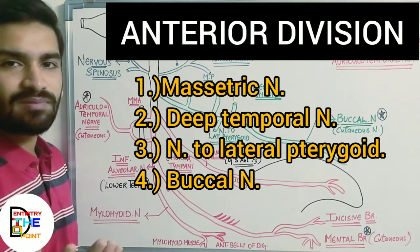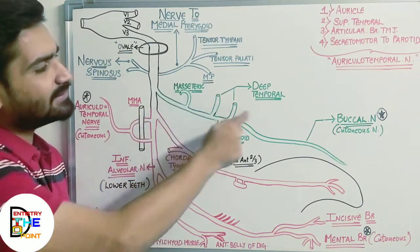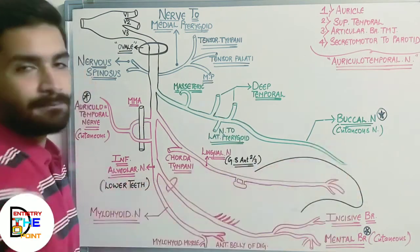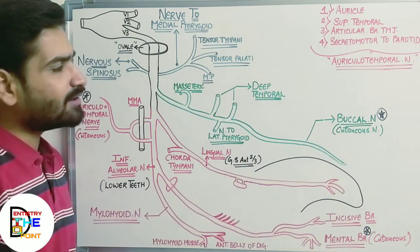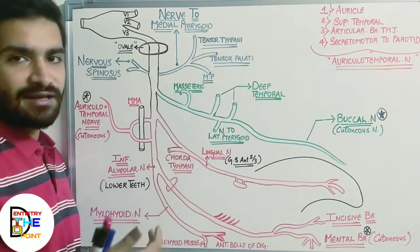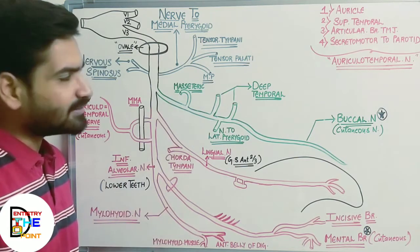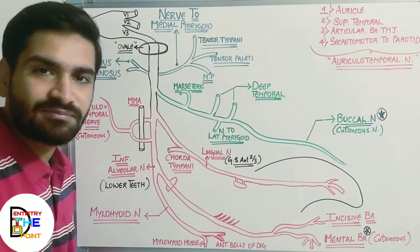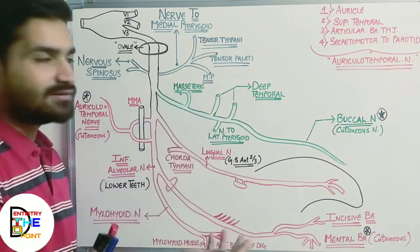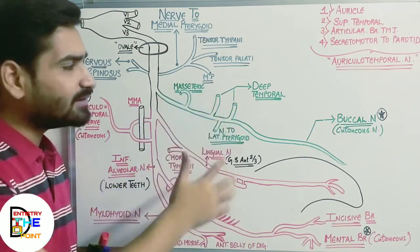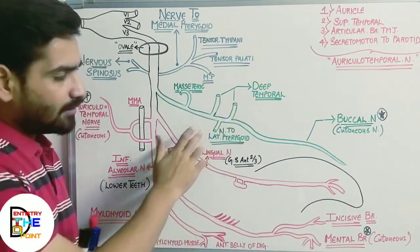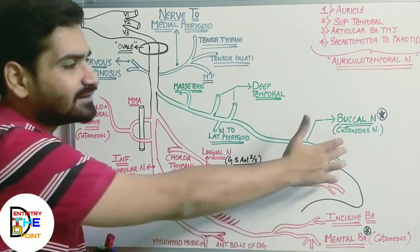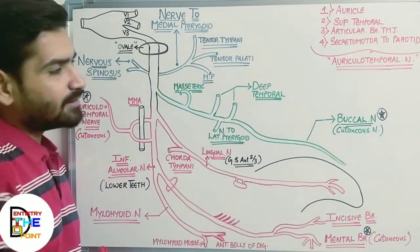Moving on to the anterior division of the mandibular nerve, it has four branches. The first branch is the masseteric nerve, the second is the deep temporal nerve, the third is the nerve to lateral pterygoid, and the fourth is the buccal nerve — the buccal branch of the mandibular nerve. The masseteric nerve supplies the masseter muscle, a muscle of mastication. The deep temporal nerve supplies the temporalis muscle, and the nerve to lateral pterygoid supplies the lateral pterygoid muscle.